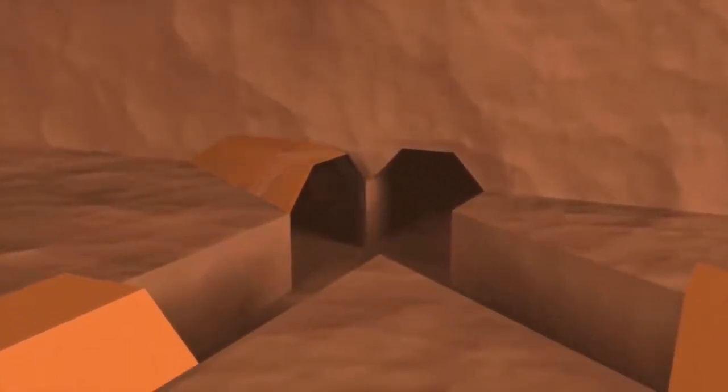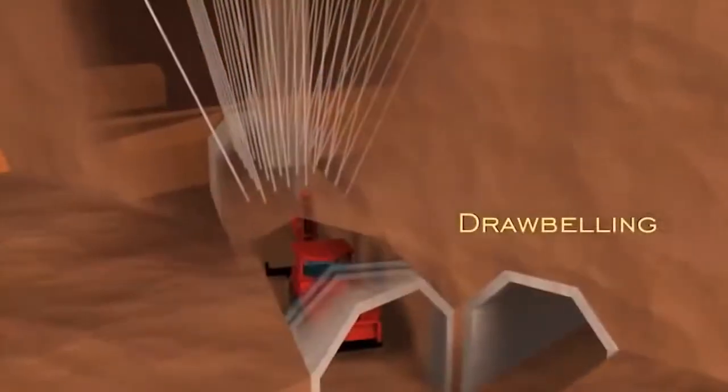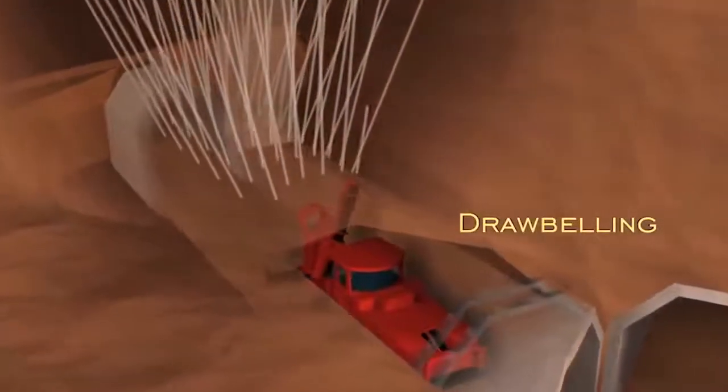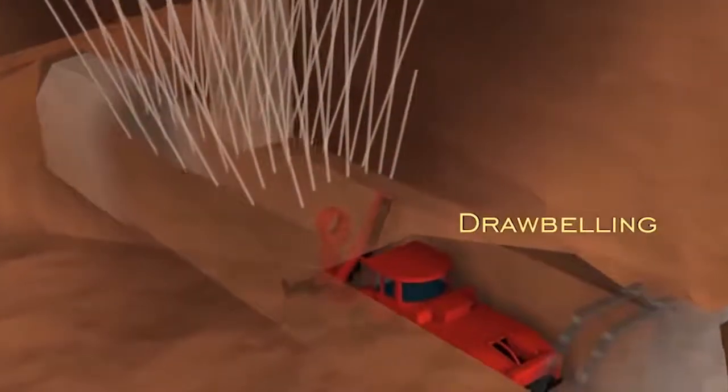Once caved, draw points are developed on the extraction level. Over the life of the Grasberg block cave, we will develop over 2,400 draw points and mine the deposit at 160,000 metric tons of ore per day.